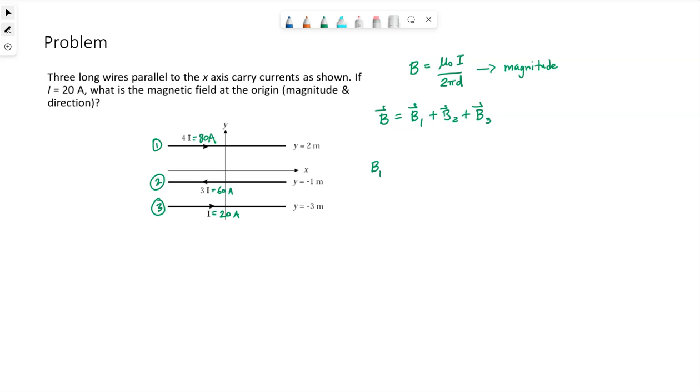So the magnitude is not terribly hard to find. So B₁ μ₀, I remember the exact value, 4π times 10 to the negative 7. The units are Tesla meters over amps. The current in wire 1 is 80 amps divided by 2π, the D, the distance. So we're trying to find the field at the origin right here. So the distance D₁ is simply the distance from where wire 1 is to the origin. So 2 meters.